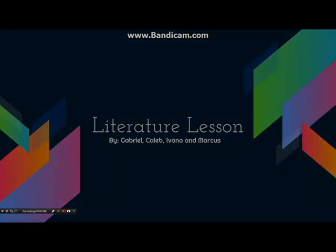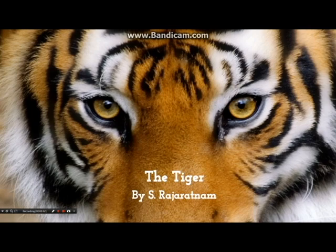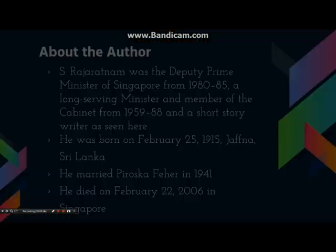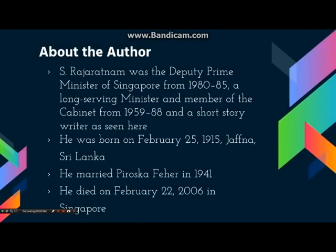This story was written by Sina Tambi Rajaratnam. Rajaratnam is widely known in Singapore for being one of its first leaders. He co-founded the People's Action Party, the political party that has been governing Singapore since 1959, and was appointed Deputy Prime Minister of Singapore in 1980. He remained in cabinet for another five years. The Tiger was a short story written by him around 1937–1948, and it's not known exactly when he wrote this story.